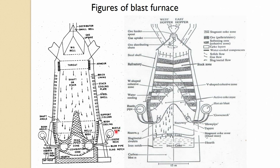Key components include the bustle pipe, the bustle man and this one angle, tuyeres, blow pipe, goose neck, mantle, tap hole, throat, and stock line. These are the things which we would be discussing, especially about the bustle pipe, blow pipe, and mantle.